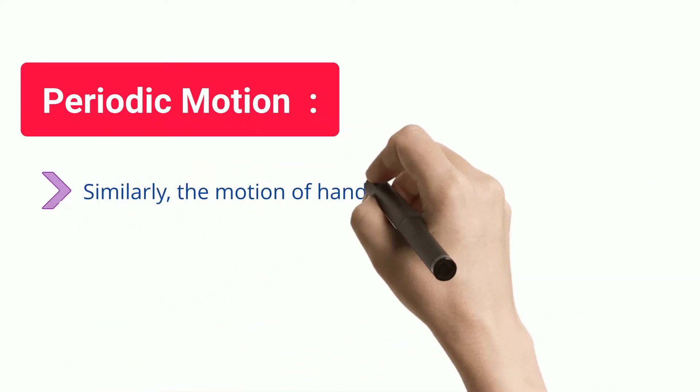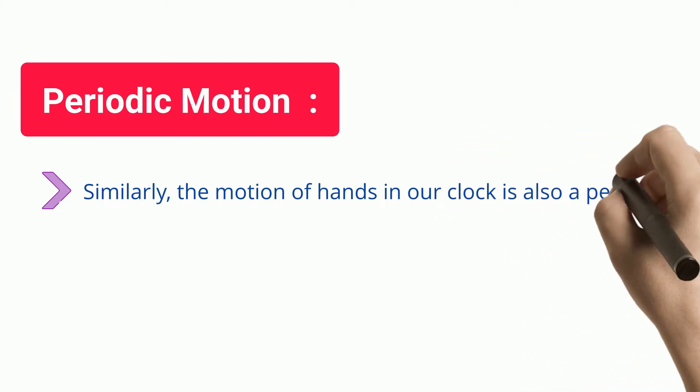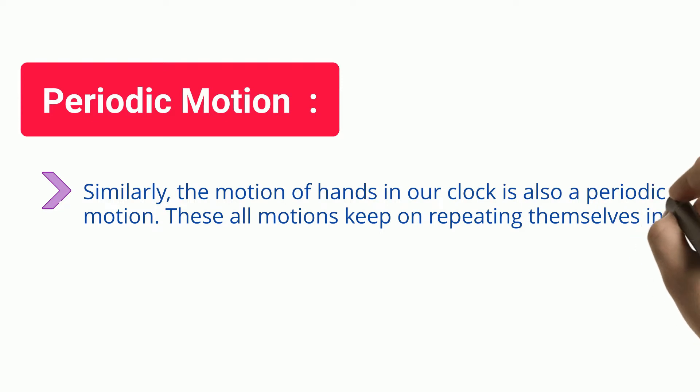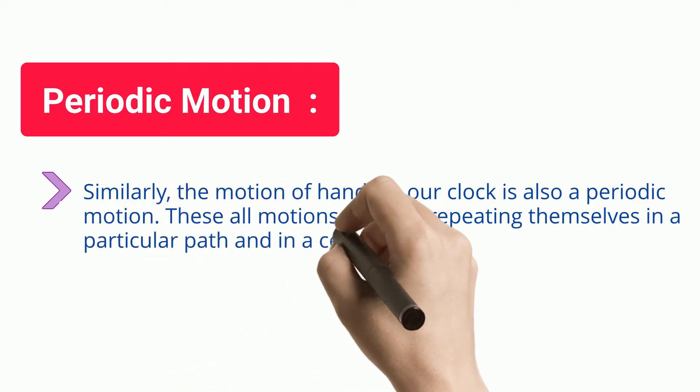Similarly, the motion of hands in our clock is also a periodic motion. These all motions keep on repeating themselves in a particular path and in a certain period of time.